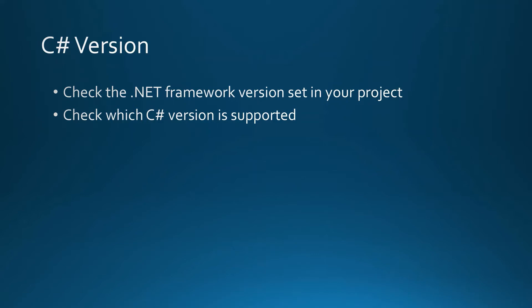I'm going to show you how to check the .NET Framework version you're using in your project in Visual Studio, and then we will move to the C# version history to check which C# version corresponds to that.